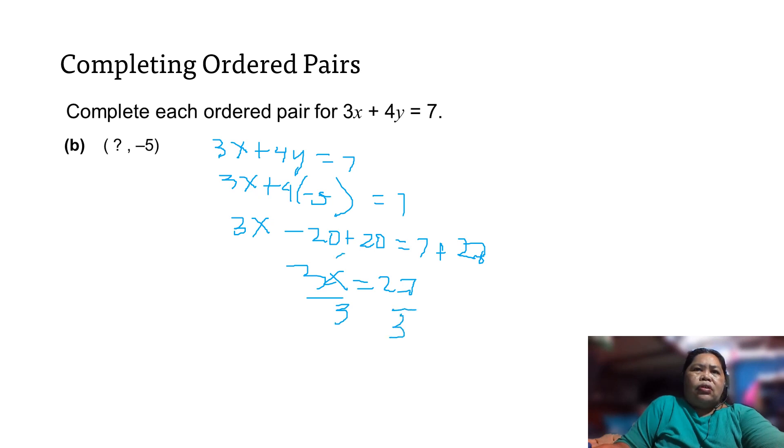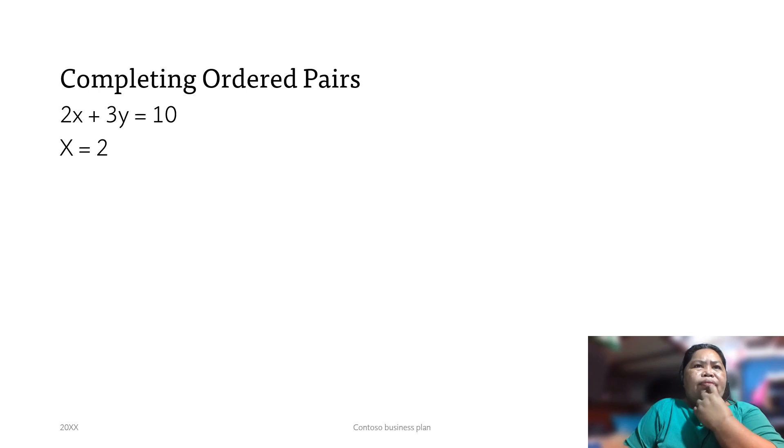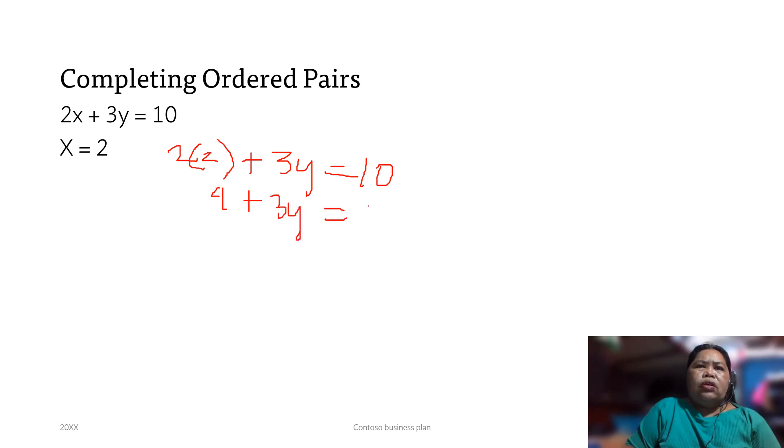Alright, so let's have here: if our x = 2, we have 2x, or 2 times 2. We can substitute it directly. So we have 4 + 3y = 10. 4 + 3y = 10 - 4. So we got 3y = 6, divided by 3. Our y = 2.